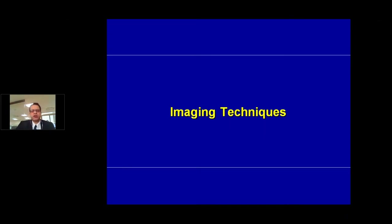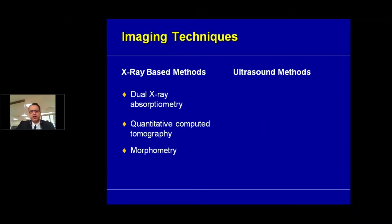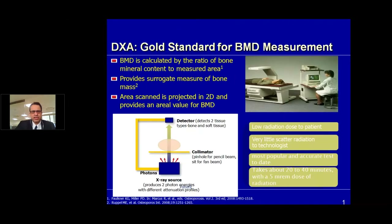Let's move on to imaging techniques that help define osteoporosis. The usual ones include the DEXA scan, which is typically used across the board. We also have cheaper options used in camps, including ultrasonic methods, quantitative CT, and bone morphometric measurements. DEXA scan calculates bone mineral density as the ratio of bone mineral content over a measured area. It provides a surrogate measure of bone mass, scans in two dimensions, involves very low radiation, is quick, and is the most popular and accurate test to determine osteoporosis.